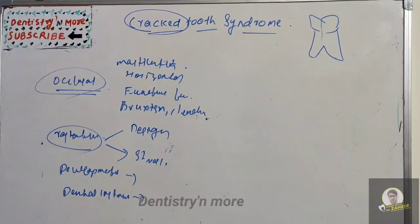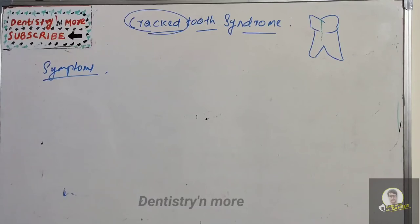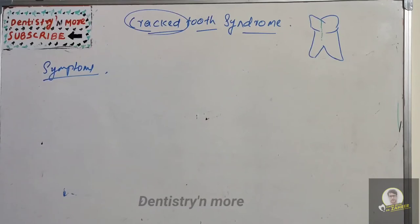Regarding symptoms of Crack Tooth Syndrome, there will be pain — sometimes acute pain on mastication of grainy foods, or a sharp brief pain with cold. It can also range from slight to very spontaneous pain. It can also be associated with irreversible pulpitis, pulp necrosis, and apical periodontitis.